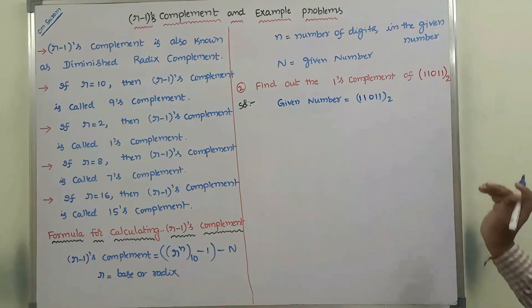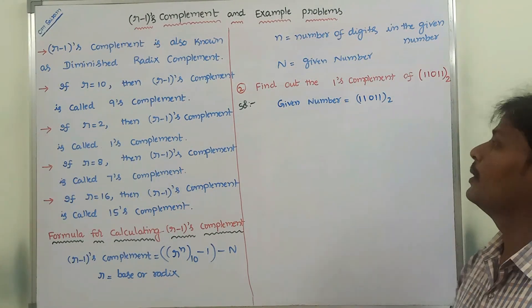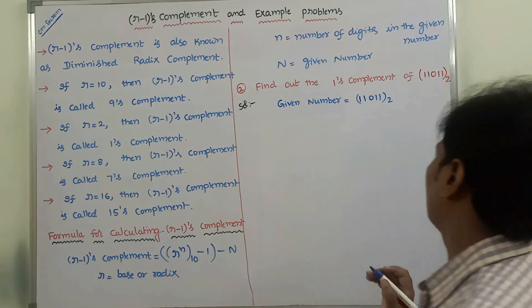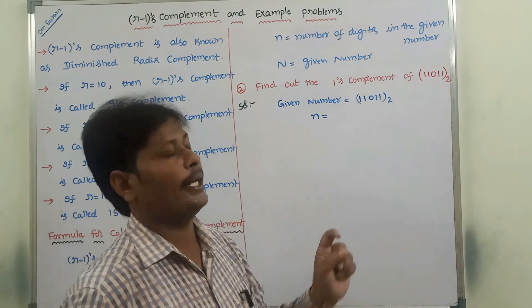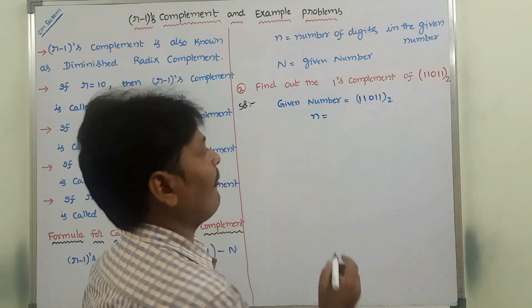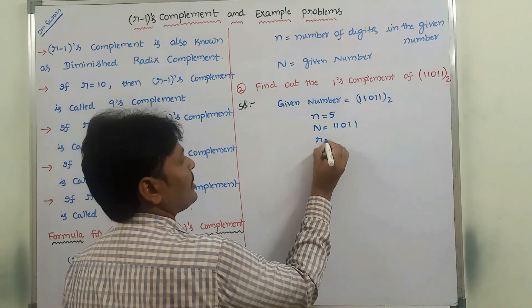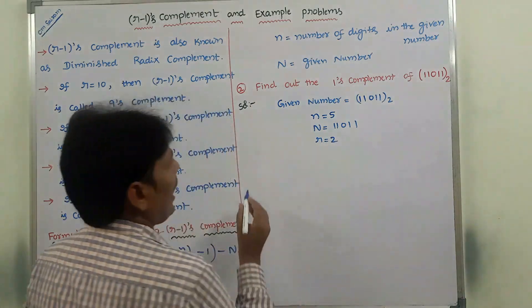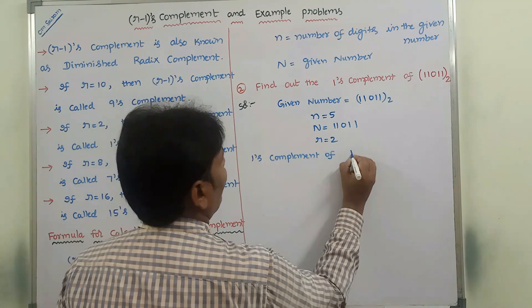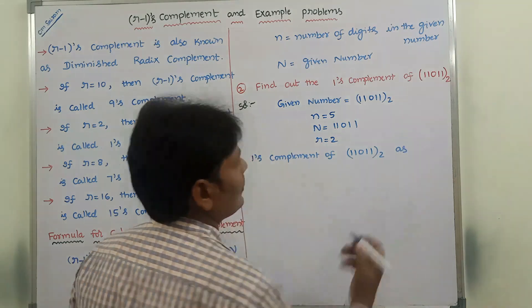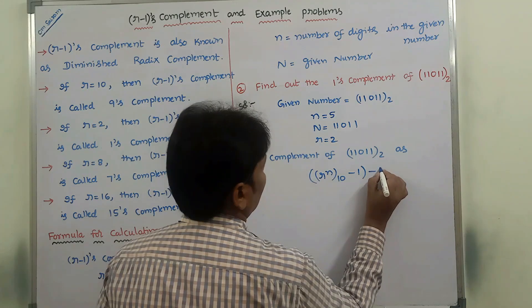Now we go to the next problem. The second problem is: find out the 1's complement of 11011 base 2. The given number is 11011 base 2. Small n is the number of digits in the binary number — 1, 2, 3, 4, 5 — so there are 5 digits. Capital N is the given number 11011. The base or radix of the given number is 2. Now we have to calculate the 1's complement.